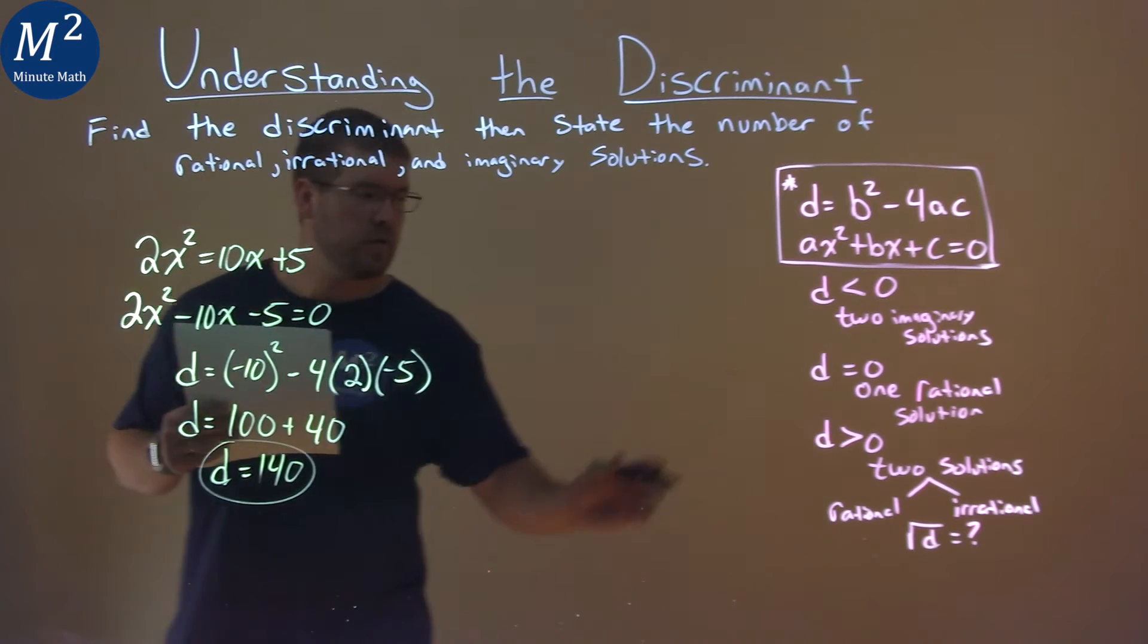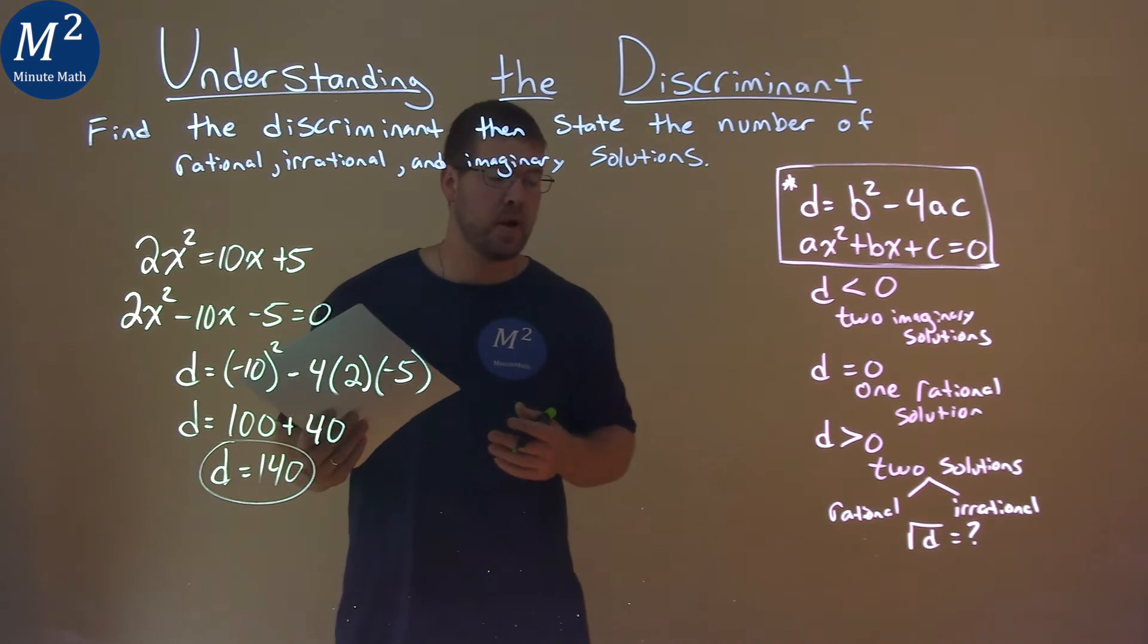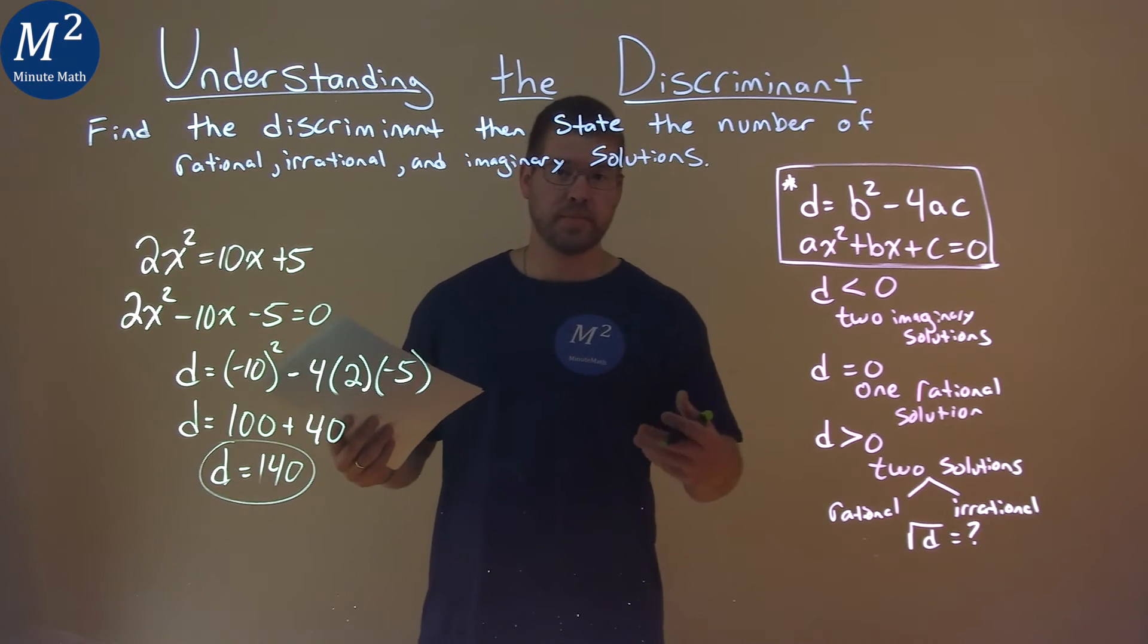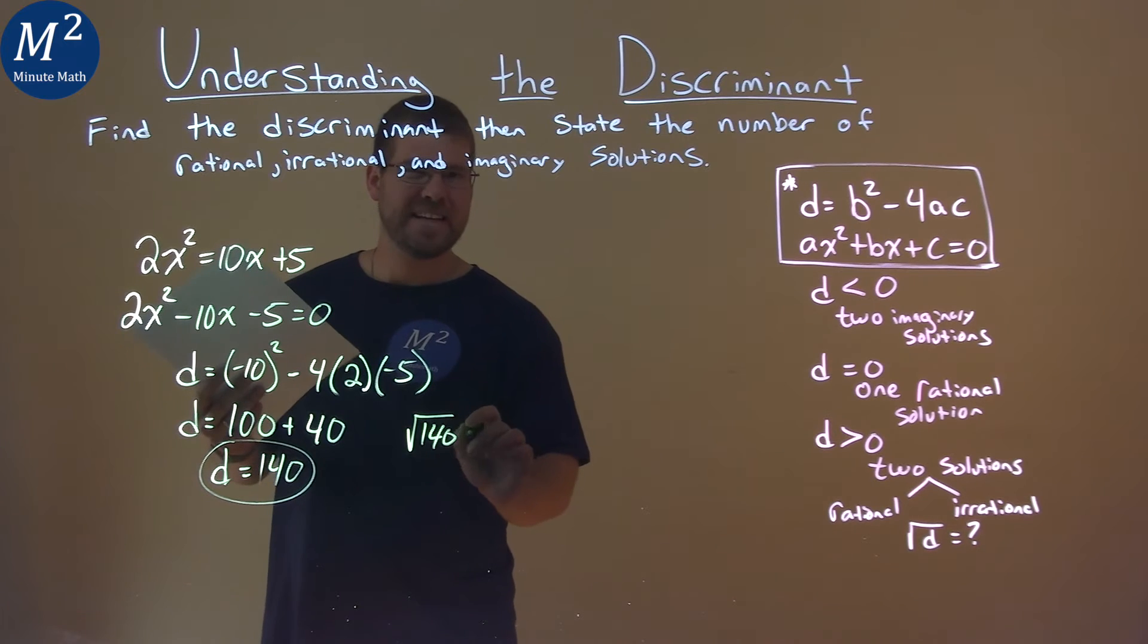Great. So our discriminant is clearly greater than 0, so we have two solutions that are going to be real. Are they rational or irrational? Well, the square root of 140 doesn't go in evenly.